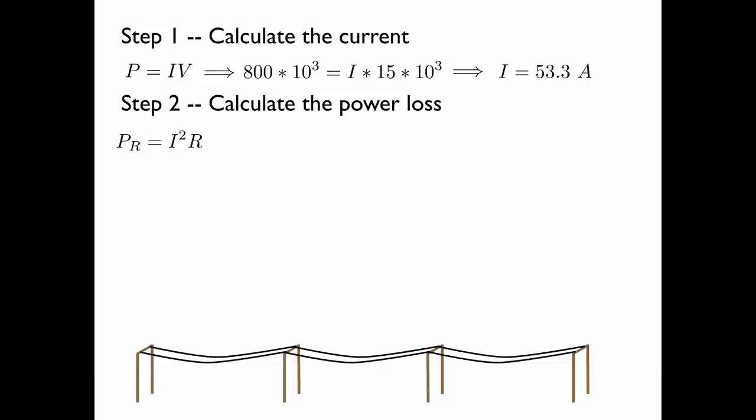Now this formula is only true for an object with resistance such as copper wires or light bulbs. So using this formula we can calculate the power loss. We plug in the current which we just found and the resistance which was stated to be 2 ohms. And we find that about 5.7 kilowatts of the original 800 kilowatts is lost due to resistive heating.